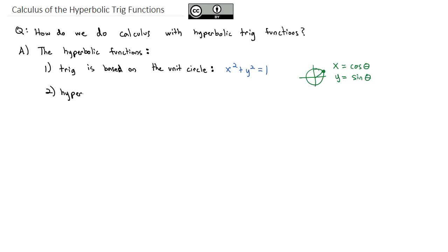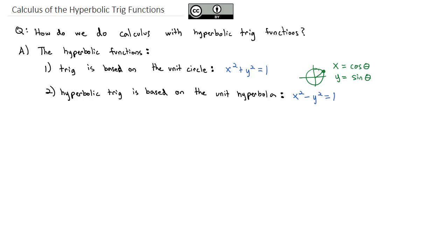Hyperbolic trig is based on the unit hyperbola, hence the name. We're still working with x squared, y squared, and 1, but now we look at what happens if x squared minus y squared equals 1. When we do x squared minus y squared equals 1, we get a hyperbola shape. At any point on this hyperbola, we define the x value as the hyperbolic cosine of the angle, and the y value as the hyperbolic sine of the angle.